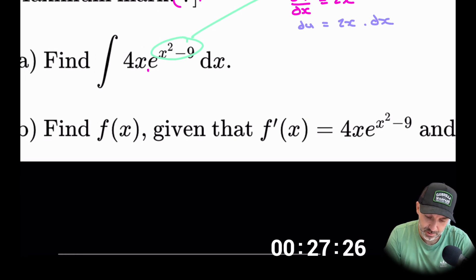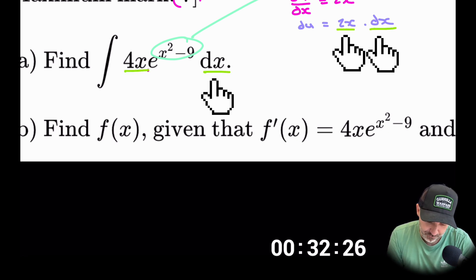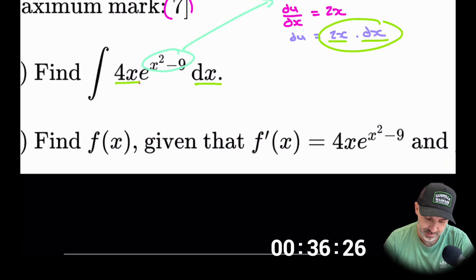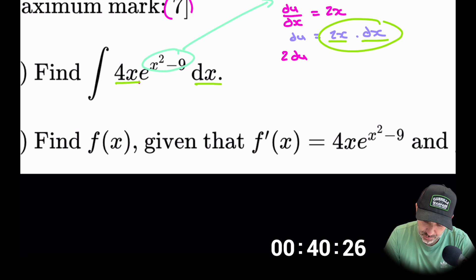Now this looks very much like the question. We have a dx and a 2x, but we have a 4x here. So we want to make this here on the right hand side look exactly like the question. I just need to times both sides by 2. So we have 2 du and that is now equal to 4x dx.